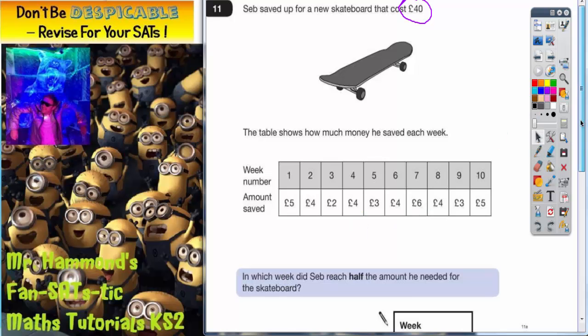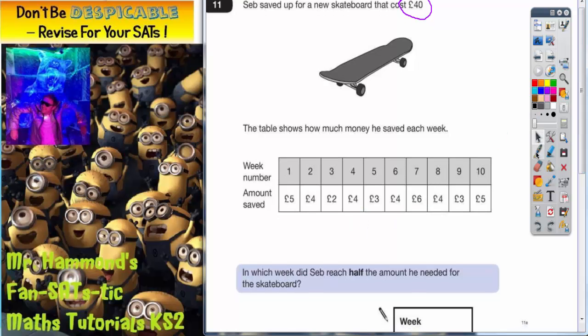So the first part of the question says this: in which week did Seb reach half the amount he needed for the skateboard? Well if the skateboard is £40, and it says so up there, half of this is £20.